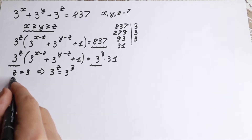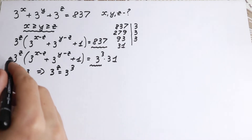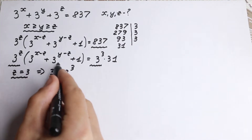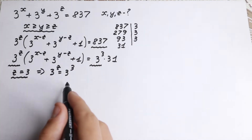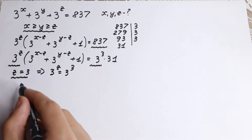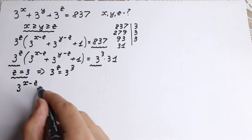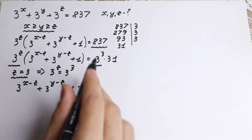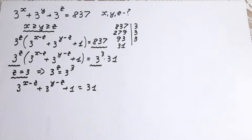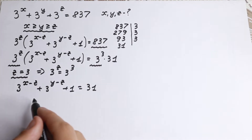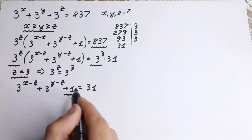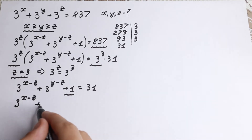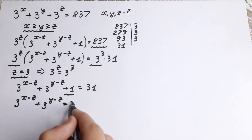So z equals 3. We cancel the 3 to the power z from both sides, and we're left with the parentheses equal to 31. So: 3 to the power x minus z, plus 3 to the power y minus z, plus 1 equals 31. We can subtract 1 from both sides to get 3 to the power x minus z plus 3 to the power y minus z equals 30.